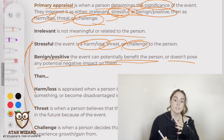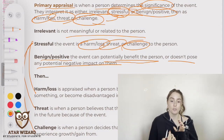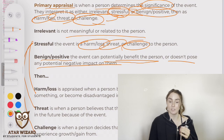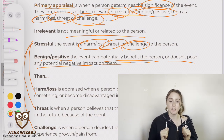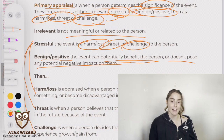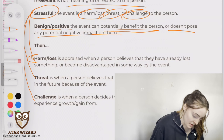Benign/positive is when you see the event and think this could be a really great thing. For example, you might have a psychology SAC but think you can use this as an opportunity to do really, really well — and that would make it a benign/positive thing.